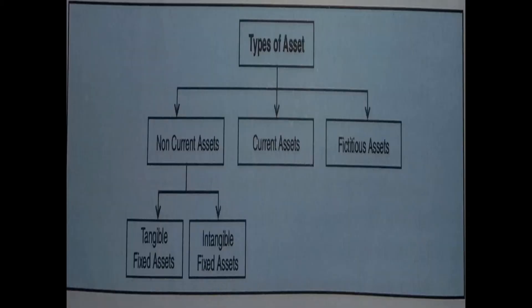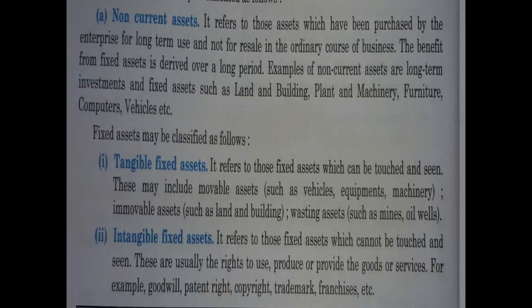Types of assets: non-current assets, current assets, and fictitious assets. Non-current assets, or long-term assets, can be divided into two parts: tangible fixed assets and intangible fixed assets. Non-current assets are those which we normally do not hold for sale purposes but use over a long period in business — like land, building, plant and machinery, furniture, computers, and vehicles.